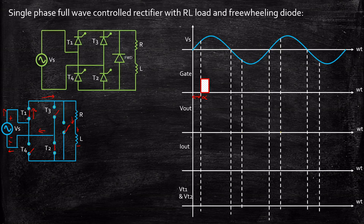The output voltage in this case will be equal to Vs because there are no power consuming elements — T1 and T2 are acting as short circuit and whatever we are supplying will appear at the load terminals. As a result Vout is equal to Vs.